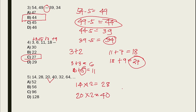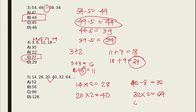Again, we subtract by 8: 40 minus 8 equals 32. And 32 times 2 equals 64. So the pattern repeats: multiply by 2, then subtract by 8. So 64 minus 8 equals 56. The answer is 56.